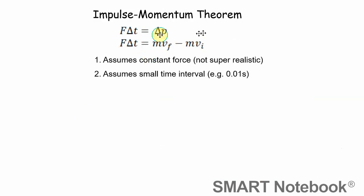So the impulse-momentum theorem is F∆t = ∆p, and I've expanded it out here. You've got force times the change in time equals mv_f minus mv_i, final velocity minus initial velocity. This assumes a constant force is acting, which is not always super realistic, but it also assumes small time intervals.